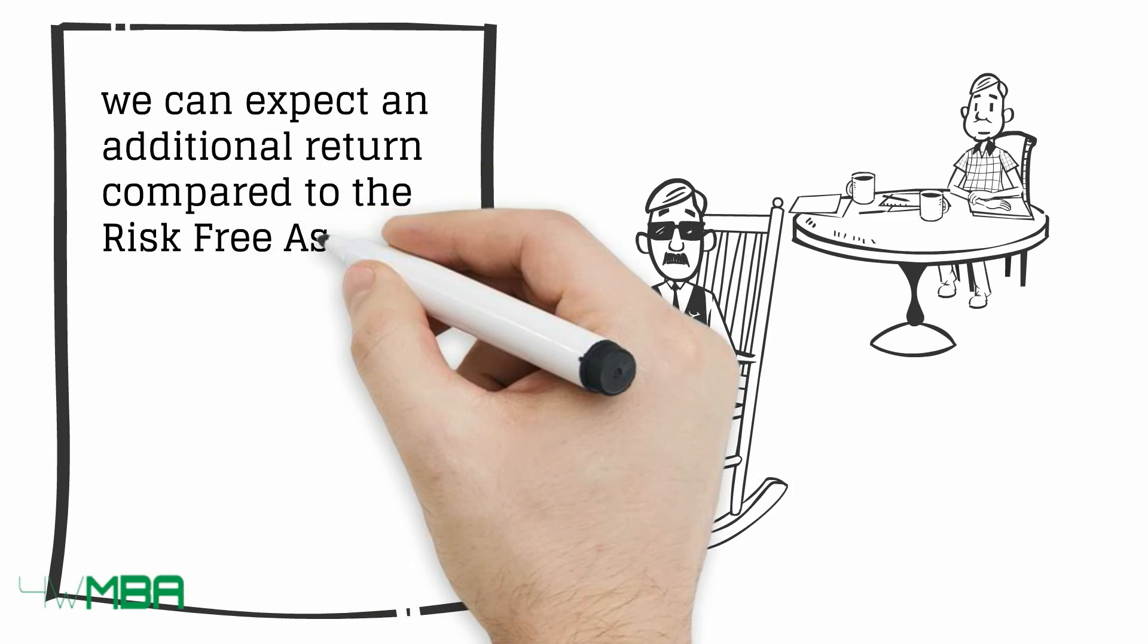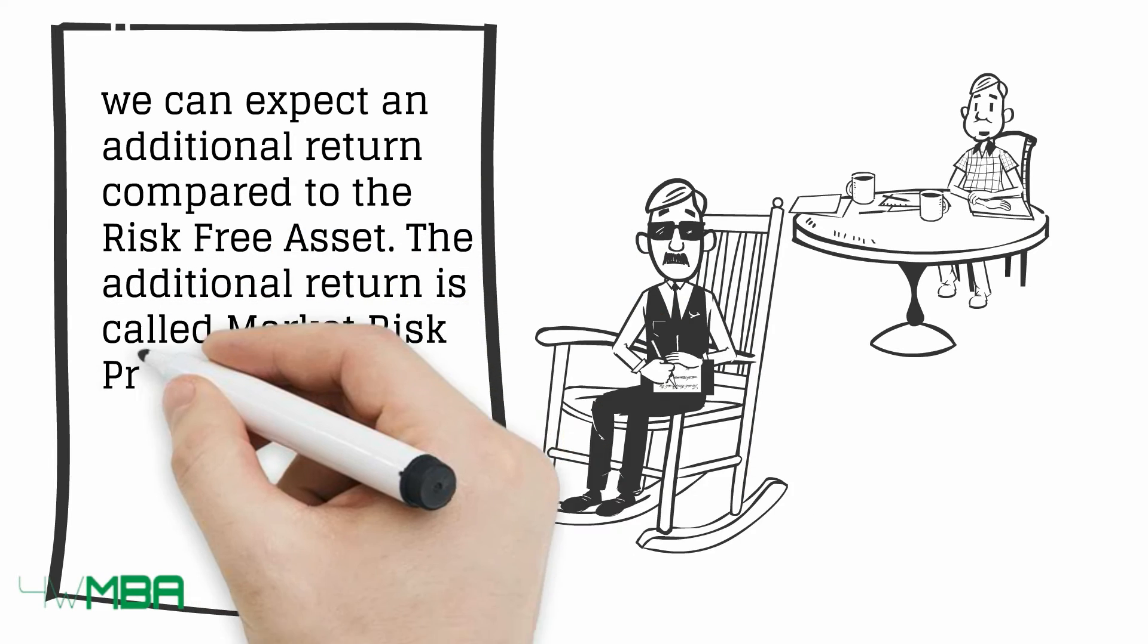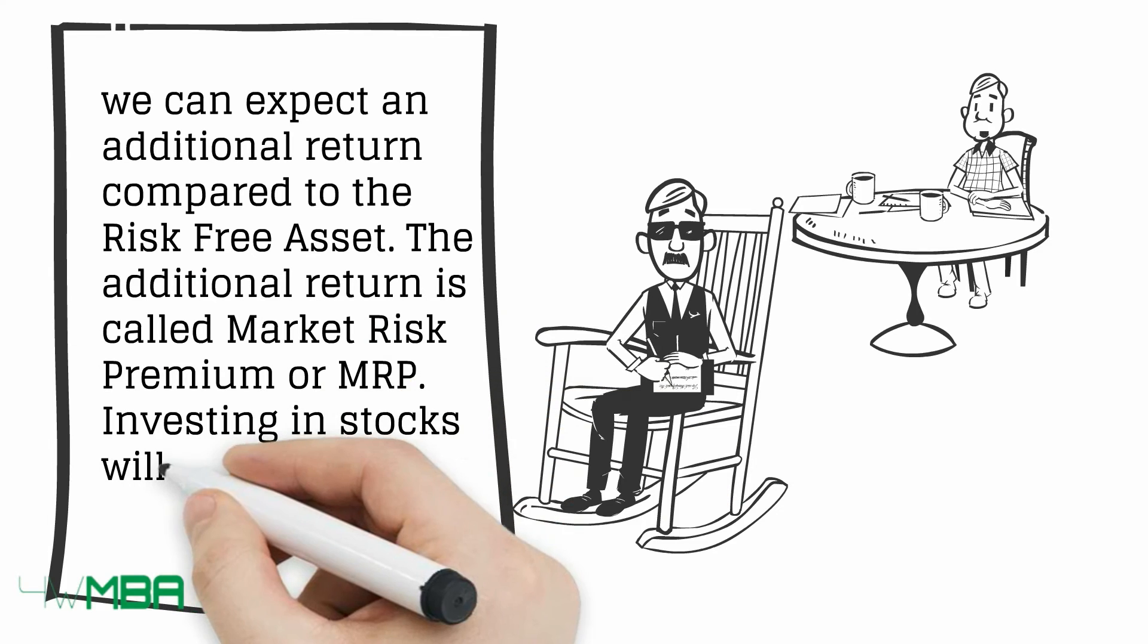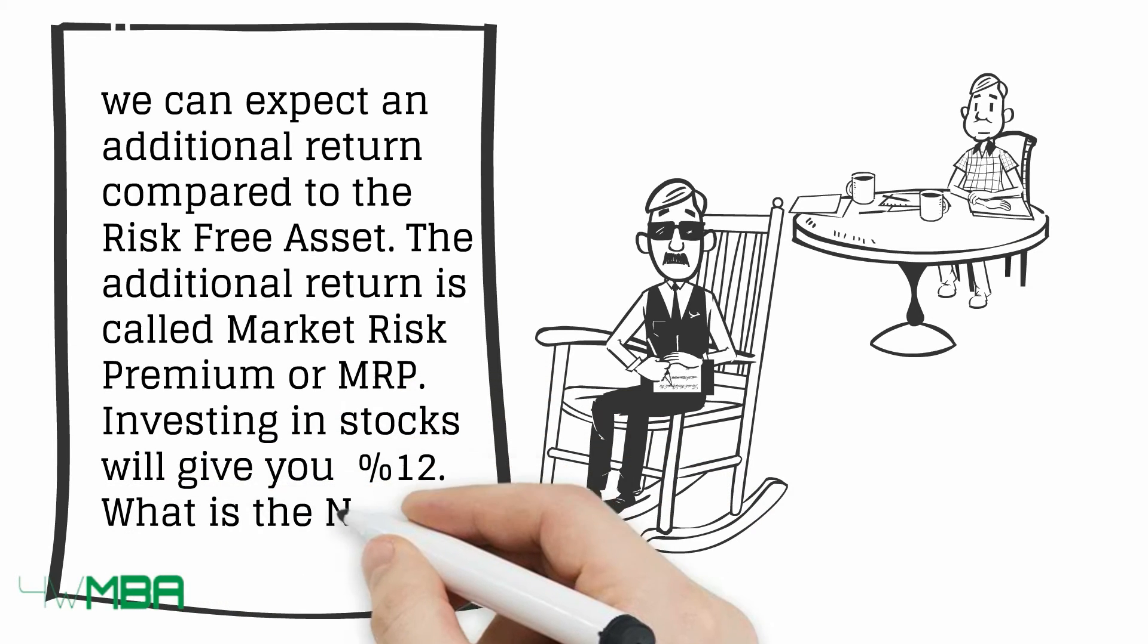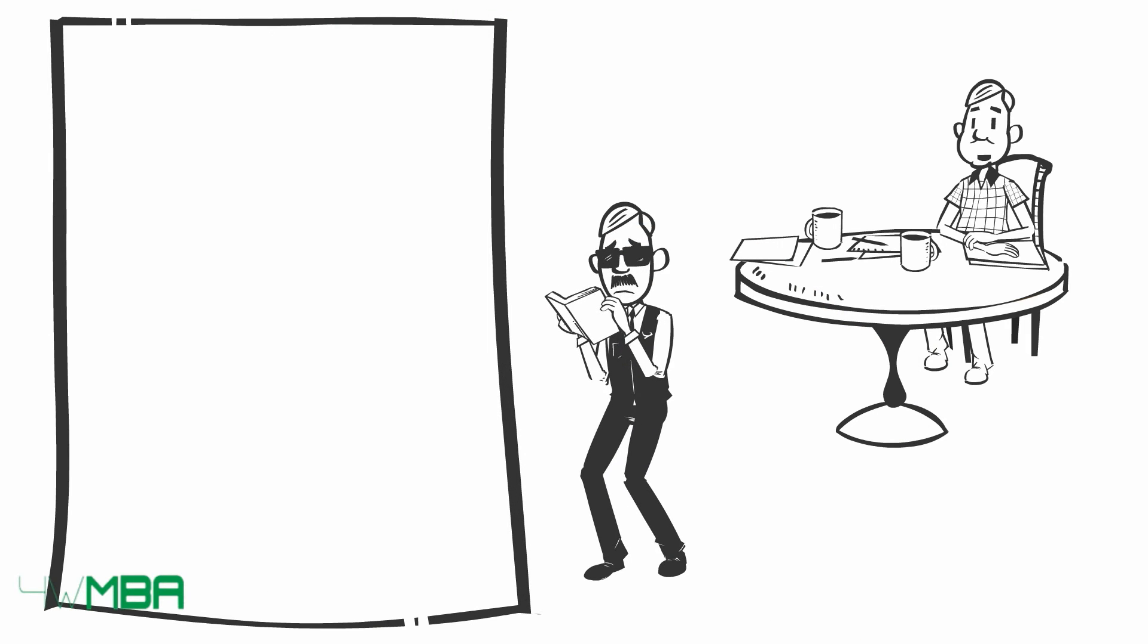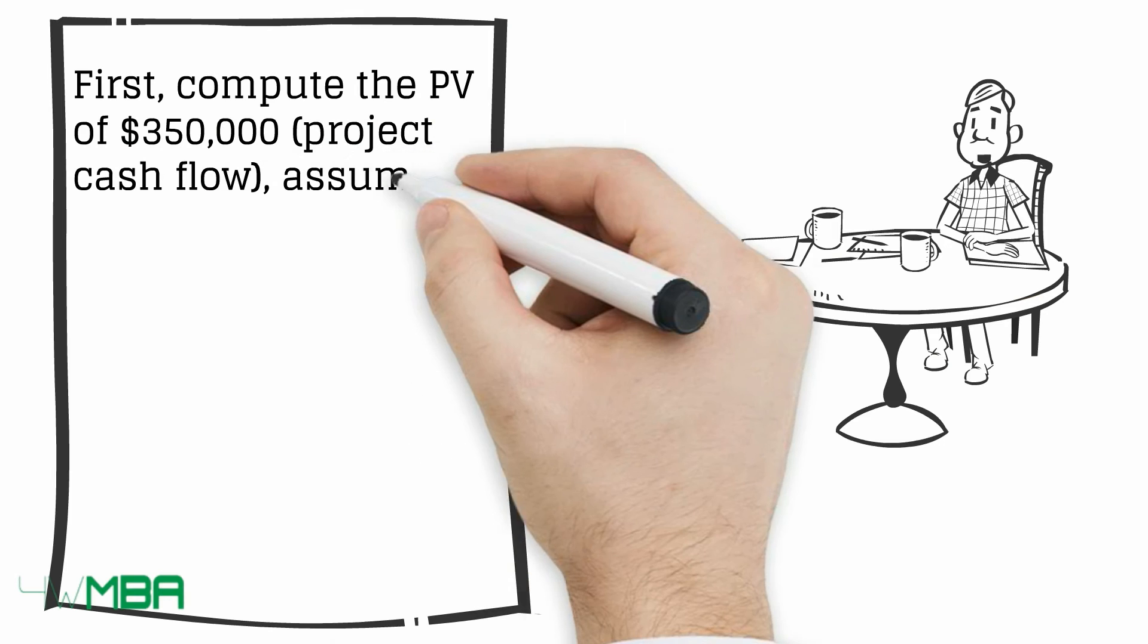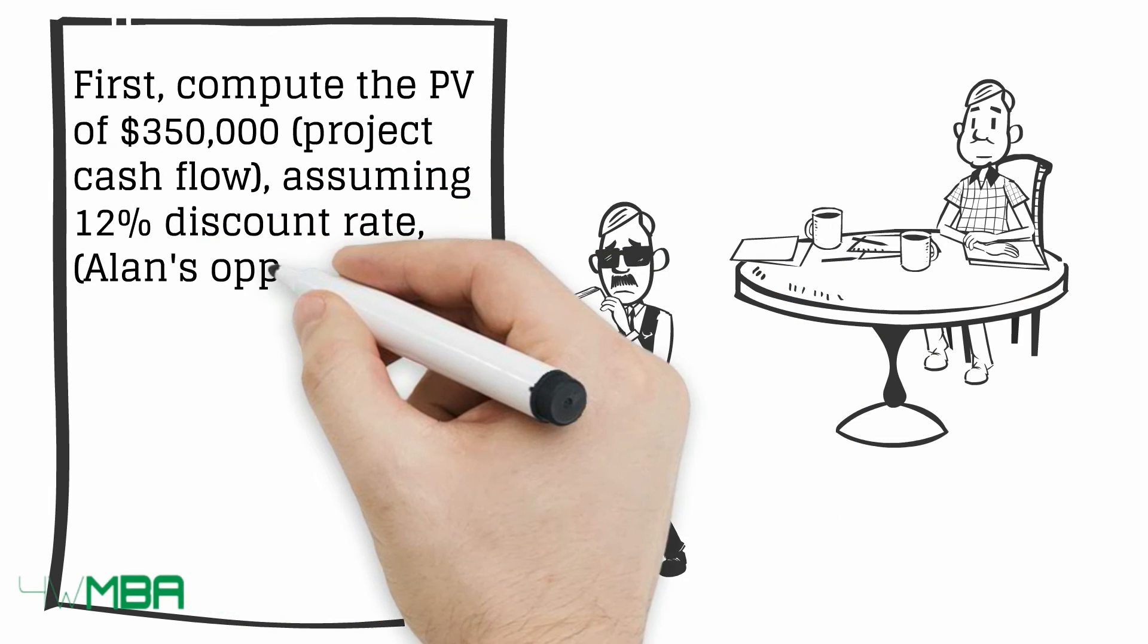Assuming a twelve percent return in stocks, what is the NPV? Do you know the answer, Alan? Don't panic. Compute the present value for the project with twelve percent opportunity cost, then subtract the initial investment from the present value.